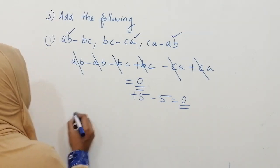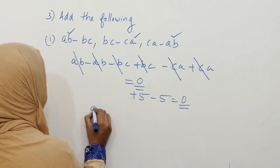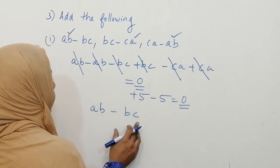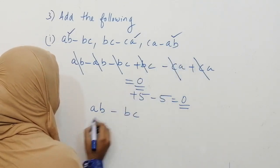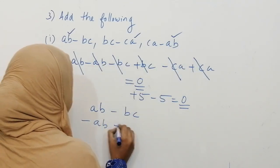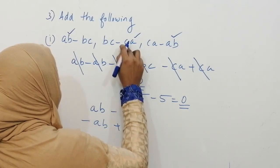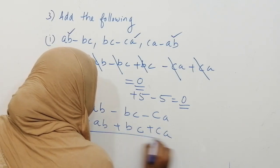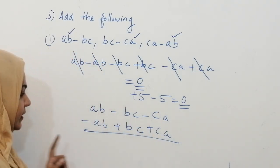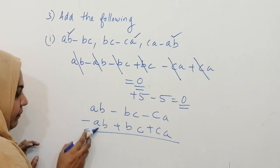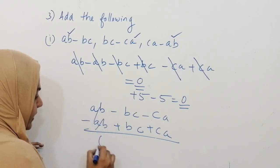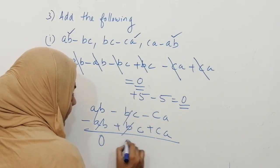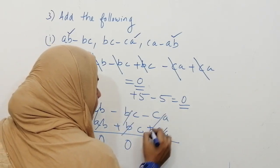If you find it difficult to solve this way, we can try another method. I am writing ab minus bc as the first term, then its like term minus ab and plus bc below it, and minus ca with plus ca below it. By combining all like terms in columns, you can see that same variables with different signs cancel out, so the answer is 0.